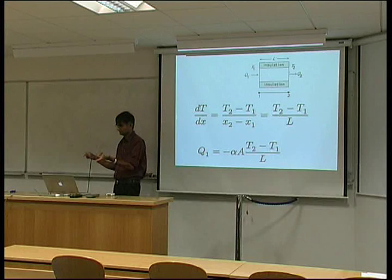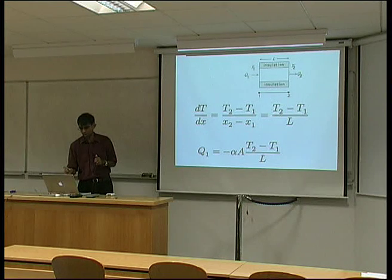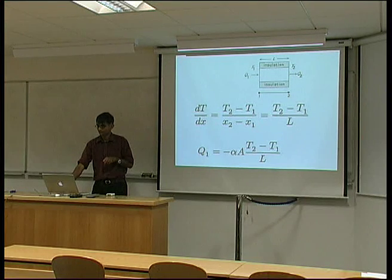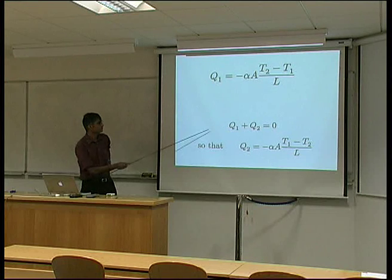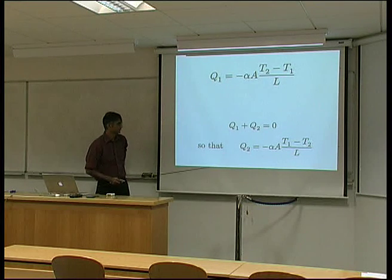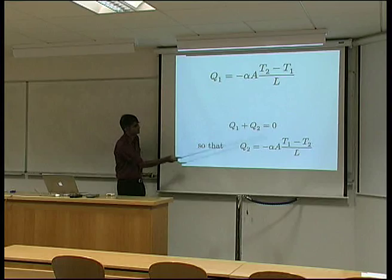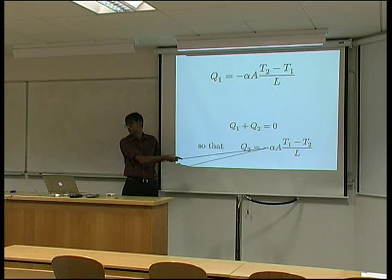It'll be negative of Q1. Yeah, it'll be the negative of Q1, that's right. So, we can write Q1 plus Q2 equals 0, and therefore Q2 will simply be the negative of Q1.